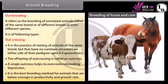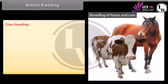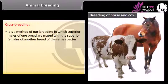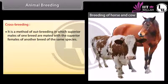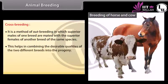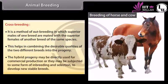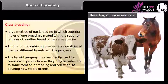Crossbreeding is a method of outbreeding in which superior males of one breed are mated with superior females of another breed of the same species. This helps in combining the desirable qualities of two different breeds into the progeny. The hybrid progeny may be directly used for commercial production, or subjected to some form of inbreeding and selection to develop new stable breeds.